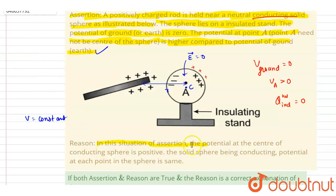Now moving ahead, the reason said here that in the situation of assertion, the potential at the center of the conducting sphere is positive. Yes, we already have seen this. And solid sphere being conducting, so potential at each point is same.